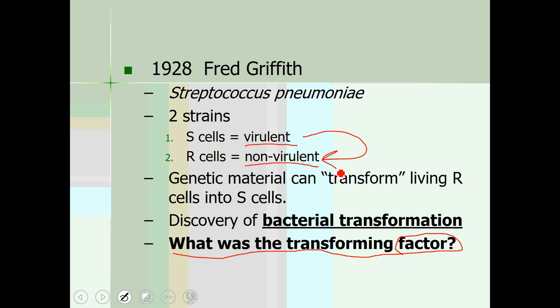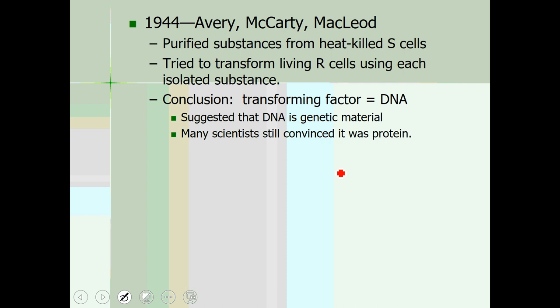There was one big unanswered question at the end of Griffith's experiment: what is that transforming factor? Is it DNA or is it protein that was leaking out of those S cells and transforming the R cells? Griffith hypothesized it was DNA. A few years later, in 1944, Avery, McCarty, and McLeod — a three-person research team — were able to prove that Griffith's transforming factor really is DNA and not protein.